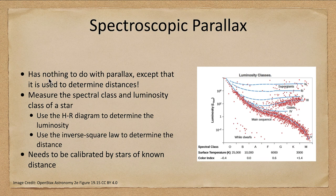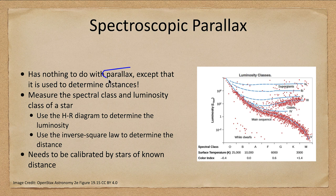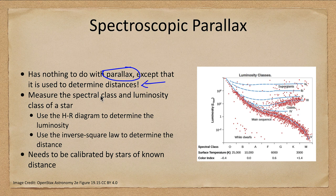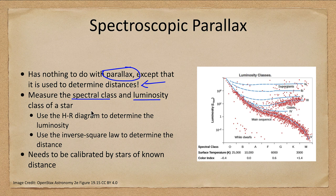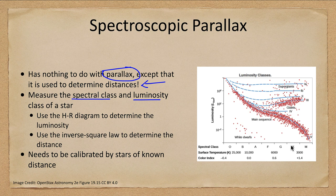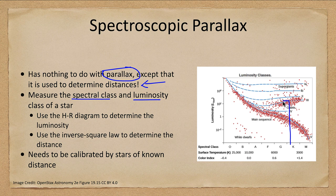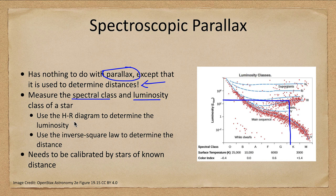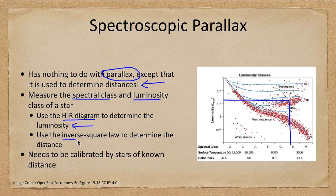So what do we do with spectroscopic parallax? First of all, it has nothing to do with parallax except that it's used to measure distance. We measure the spectral class and the luminosity class of a star. That allows us to classify it as a certain type of spectral class and luminosity class, which gives us the luminosity. We can then use the HR diagram to determine the luminosity.